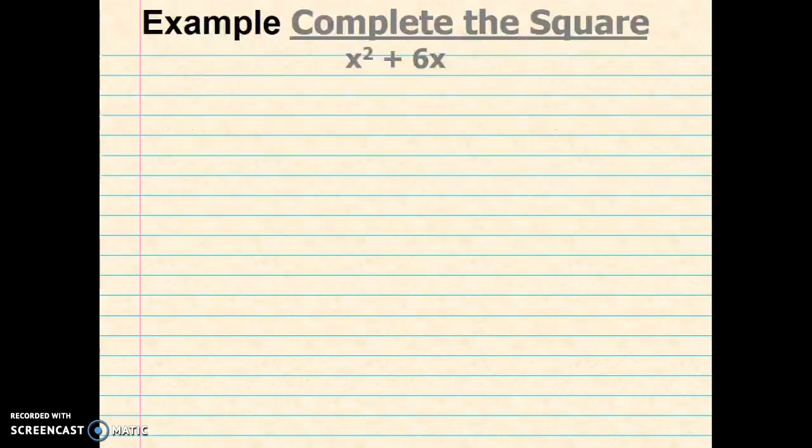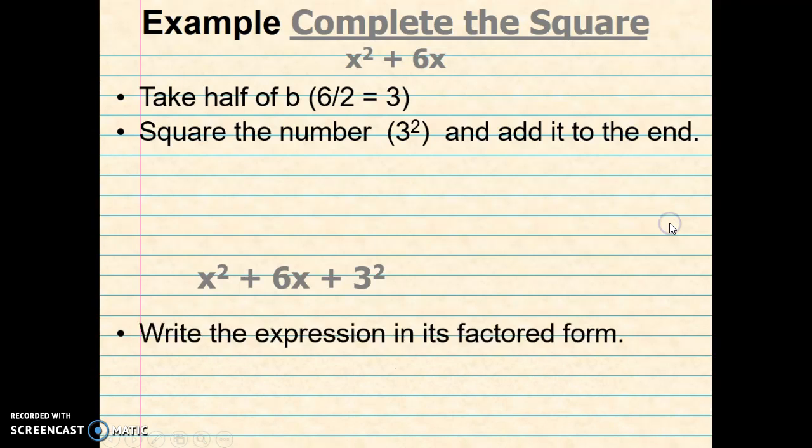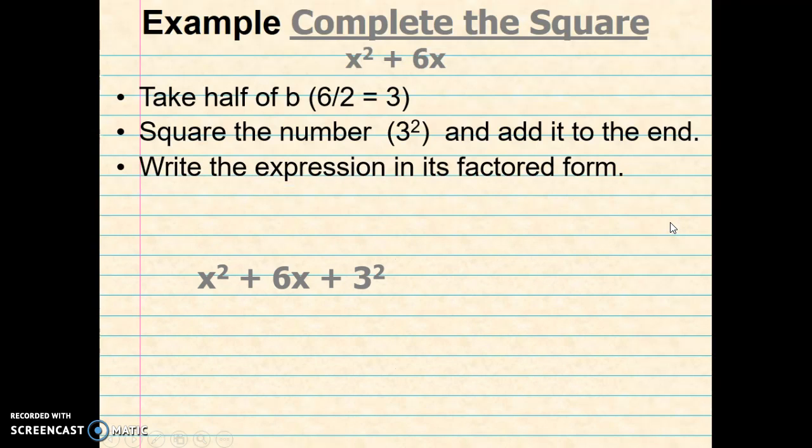So let's look at an example: x squared plus 6x. To begin with, we're going to take half of B, so 6 divided by 2 is 3. Next we're going to square the number, 3 squared, and add it to the end. Notice I leave this as 3 squared because that's going to help me write my binomial factor in just a moment. So next we're going to write the expression in its factored form: that equals x plus 3 squared. Again notice the 3 follows half of B, and the plus sign follows the plus sign of the B term.